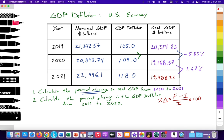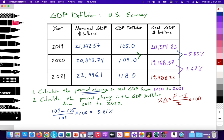Let's check your work and calculate the rate at which prices are rising. We have 109 minus the initial value of 105, divided by 105, times 100. That gives us 3.81%. Prices increased by 3.81%, basically signaling inflation in the economy from 2019 to 2020.